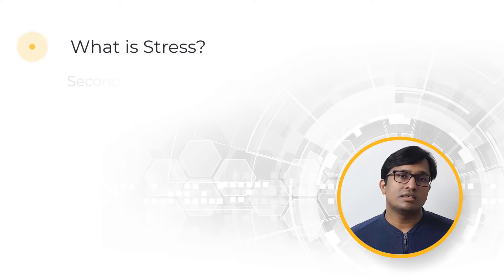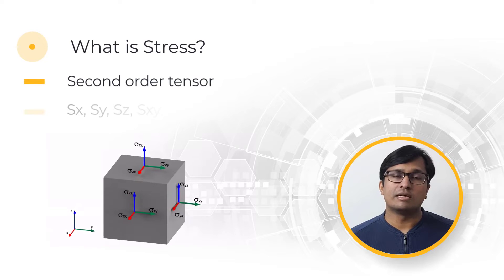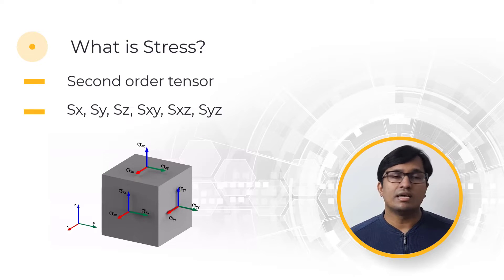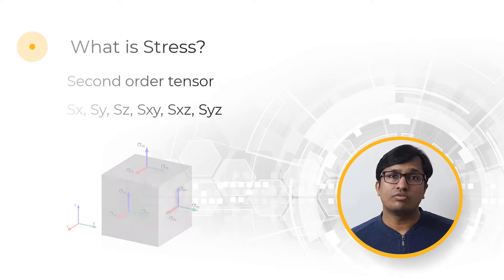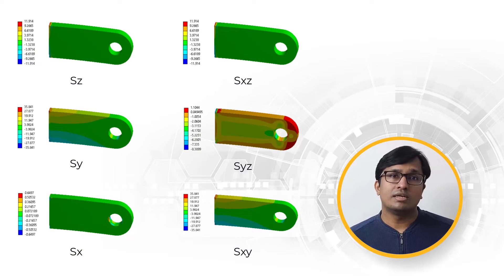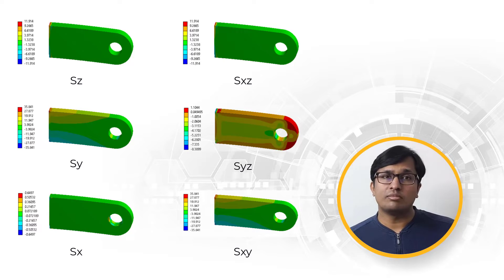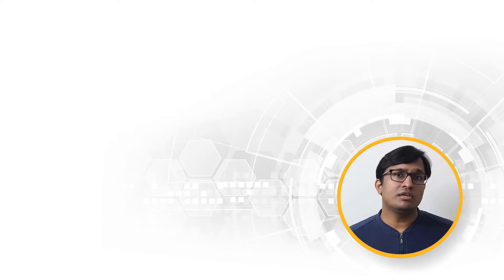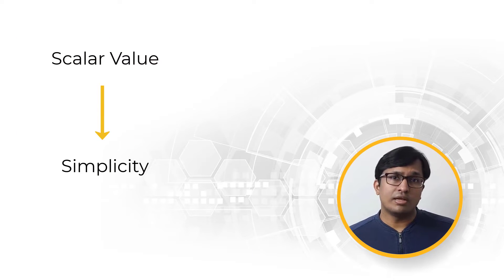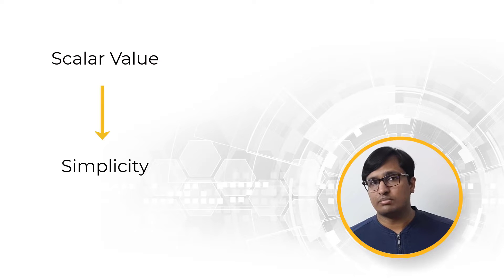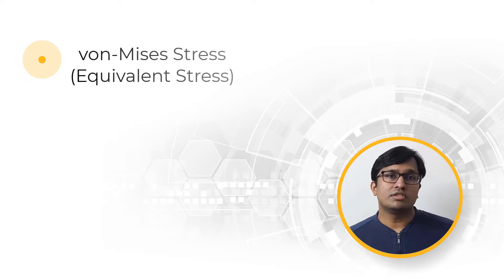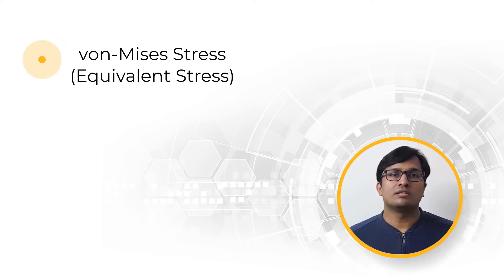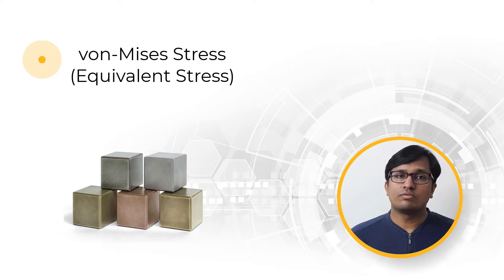What is stress? Stress is a second order tensor with six components: Sx, Sy, Sz, Sxy, Sxz, and Syz. We can plot these stress components for a part, but it is hard to determine if a material may fail if we have six stress components to evaluate simultaneously. Instead, we typically use a single scalar value to evaluate the material response. A widely known scalar stress measurement is von Mises stress, which is called equivalent stress in ANSYS Mechanical. This stress measure is generally used for ductile materials.